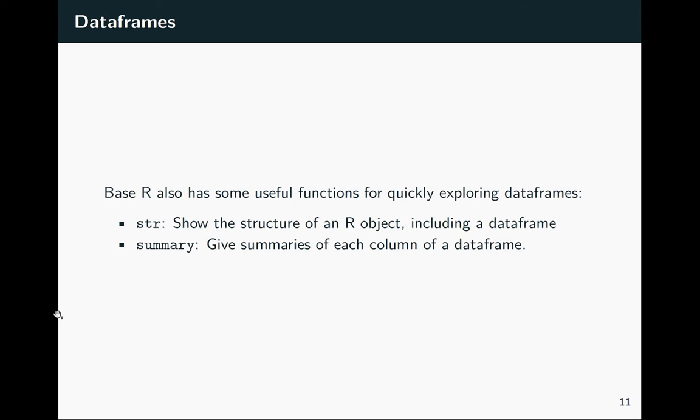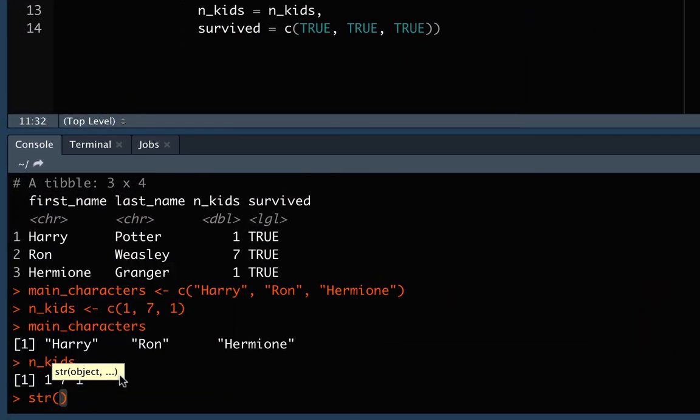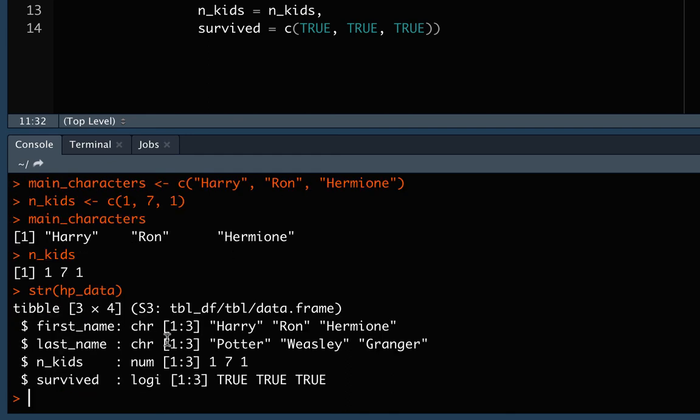There are also a few other functions in base R that are really helpful for exploring data frames, especially if you've read in one that was really big from another source. str stands for structure, and that shows you a bit about the structure of a data frame or any other R object. Summary will give you a summary of each of the columns you have in that data frame. We can take a look and do str with hp_data. With that structure, you can see it's listed each of the column names we had, some information about the data type in that column—character, character, numeric, and logical. This is giving us the number of values that are there, so each of these have three values, and then it lists some of the first few values we have. If this were a larger dataset with more rows, it would only show the first few, but since it's only got three rows, it's showing us the whole thing.